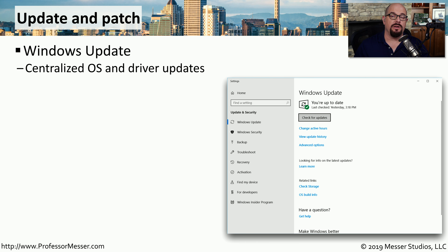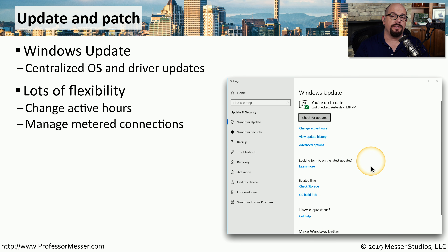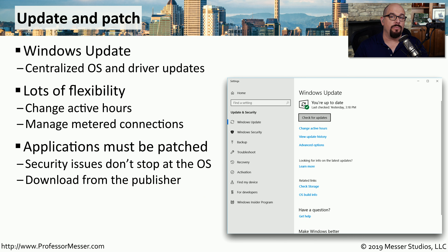Many bugs and issues can be resolved in Windows by updating the operating system. Windows Update is a centralized updating utility that keeps your system files up to date with the latest releases. You have a lot of flexibility to define how updates will be installed — whether they're simply downloaded for you to install, or automatically installed at a certain time. You can define your active hours so Windows performs updates when you're not in front of your computer, and tell Windows not to download files over slow or metered network connections. You also have to be sure to keep all of your applications updated, as most applications have their own updating system.